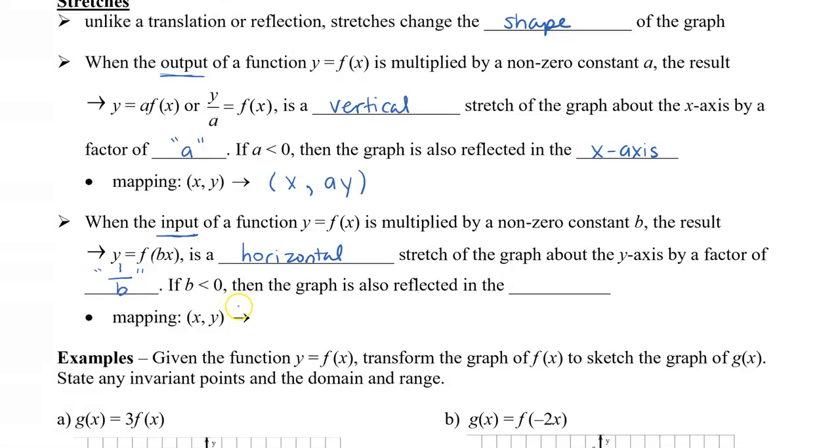If b is less than 0, then the graph is also going to be reflected in the y-axis. So because our factor is 1 over b, for our mapping notation, we're going to say that x is divided by b. And since it's a horizontal stretch, nothing will happen with the y.